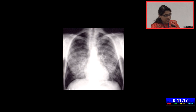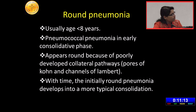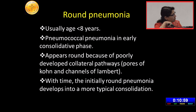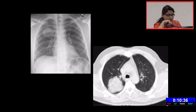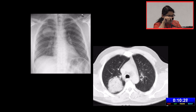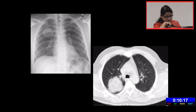Round pneumonia usually occurs in children less than 5 to 8 years and is usually seen in pneumococcal pneumonia in the very early consolidated phase. It appears round because of poorly developed collateral pathways — the pores of Cohn and channels of Lambert — which are poorly developed in children, so the pathology does not spread as fast as in adults. With time, the initially round pneumonia develops into more typical consolidation. On CT, the air bronchogram is more clearly visible, with a well-defined pathology, no pleural effusion, no mediastinal lymph nodes, and the adjacent lung totally normal. This was a case of round pneumonia which resolved completely with treatment.